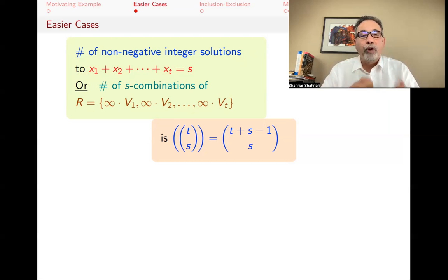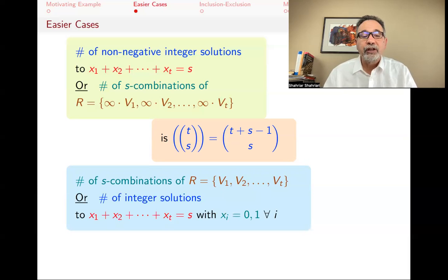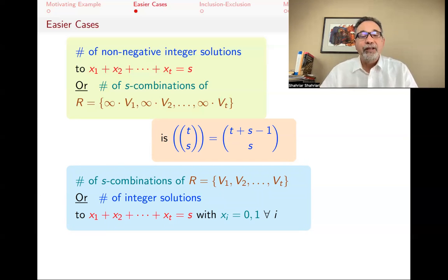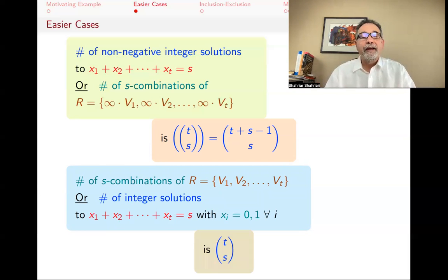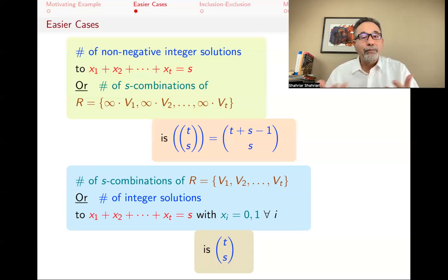If you don't have any restrictions, you can pick as many of each type as you want, and the answer is t multi-choose s. Another case we have done is when repetition numbers equal one — the number of s-combinations of a set. That's the same as finding integer solutions to X1 plus X2 plus Xt equals S where each Xi is either zero or one. This is clearly just t choose s, because you have t objects and you figure out which s to pick. These two are special cases of what we want to discuss today.